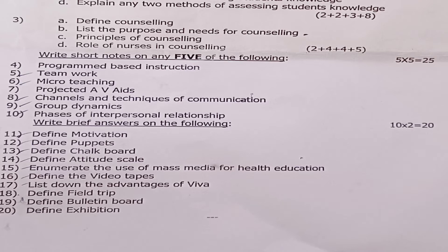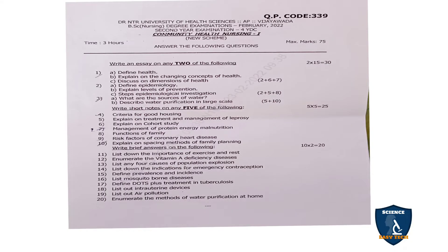In brief notes, you have to answer all 10 — there is no choice. 10 into 2 equals 20 marks. Question 11: define motivation. Question 12: define puppets. Question 13: define chalkboard. Question 14: define attitude scale. Question 15: enumerate the use of mass media for health education. Question 16: define video tapes. Question 17: list down the advantages of viva. Question 18: define field trip. Question 19: define bulletin board. Question 20: define exhibition.